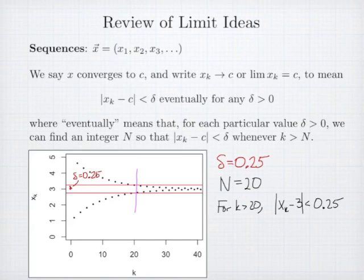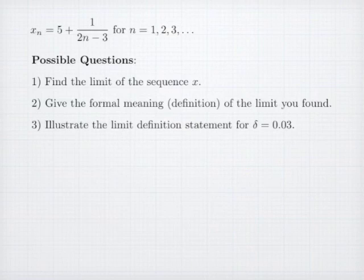And so this is what it means for a sequence to converge. That eventually, given any delta, my sequence is less than delta away from the limit. So here's an example sequence. My xn equals 5 plus 1 over 2n minus 3. Notice here my index is n instead of k. The index variable does not matter.